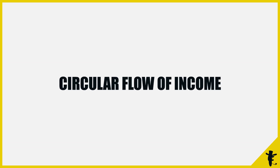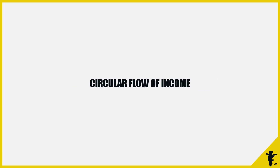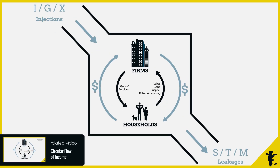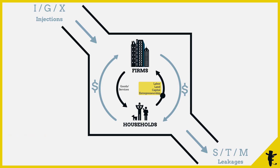Looking at the circular flow of income, we see that stuff just gets transformed in different stages. Firms use factors of production from households, perform some magic, and you get goods and services. These are sold back to households. Households pay for these things too, which reflects the value of these goods.